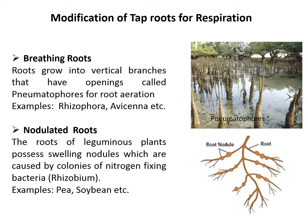Plants growing in saline and marshy places are called halophytes. They have breathing roots which grow into vertical branches that have openings called pneumatophores. These pneumatophores help to get oxygen for respiration. Examples include Rhizophora and Avicennia.